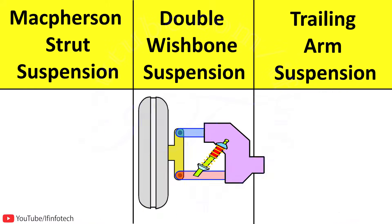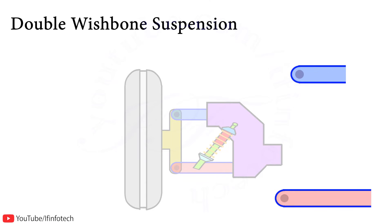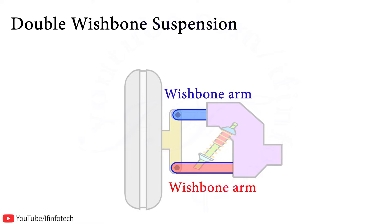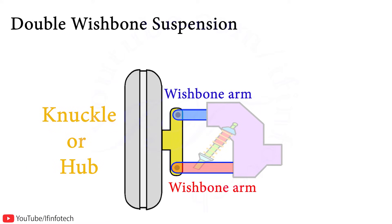Next is the double wishbone system. It consists of two wishbone arms that are located between the knuckle of the wheel assembly. Vertical movement is controlled through a shock absorber and coil spring. The wheel's motion is controlled by parameters like camber angle and castor angle.